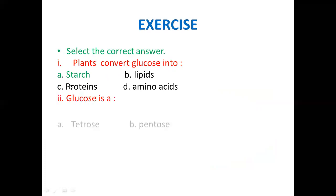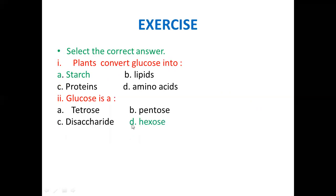Number two: glucose is a tetrose, pentose, disaccharide, or hexose? Glucose is composed of six carbon atoms — the formula is C₆H₁₂O₆. C₆ means it is a six-carbon-containing compound. So it is a hexose — 'hex' for six carbon atoms.